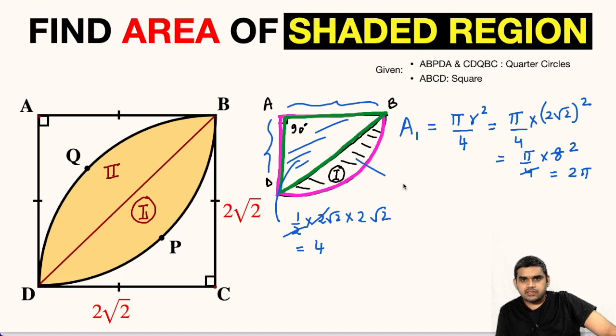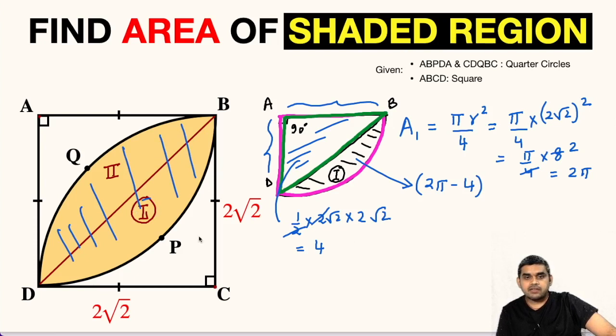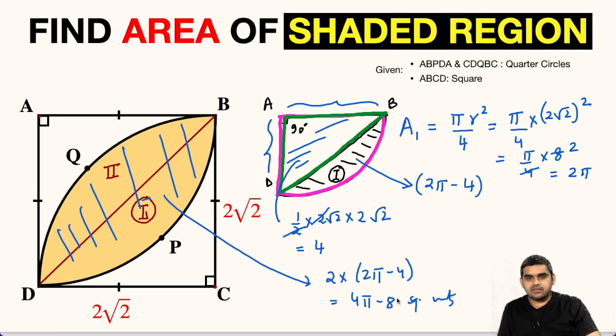So, the area of this first part of the shaded region will be equal to 2π minus 4 square units. The area of this complete shaded region will be twice the area of the first part, so this total area will be 2 times (2π minus 4) or 4π minus 8 square units. If we substitute the value of π here, in decimals we will get the area as 4.567 square units.